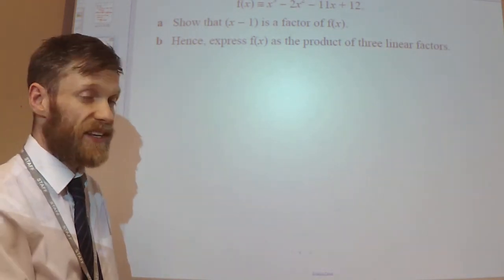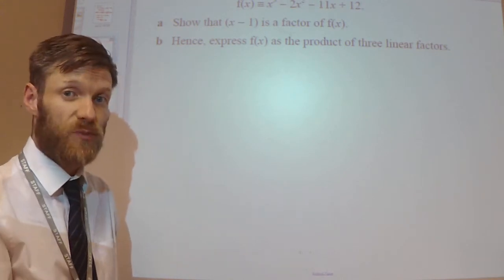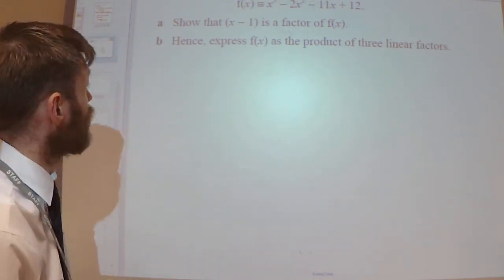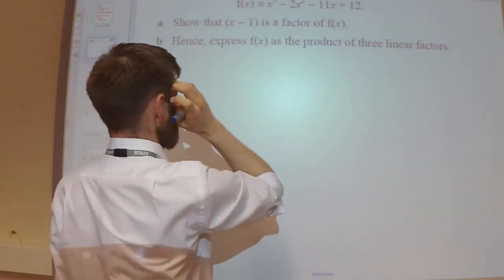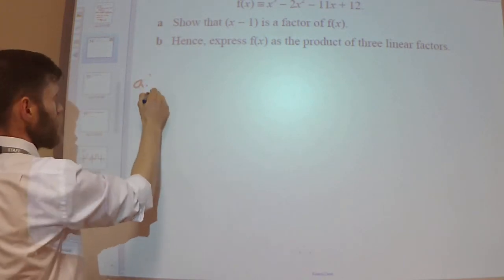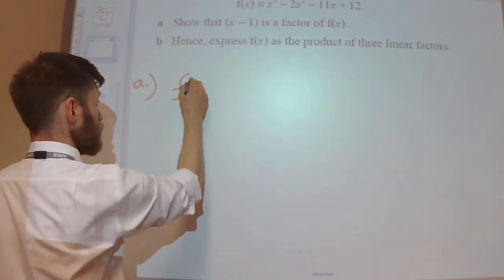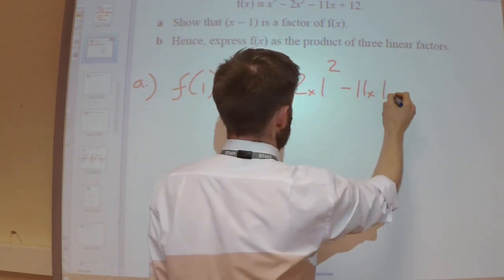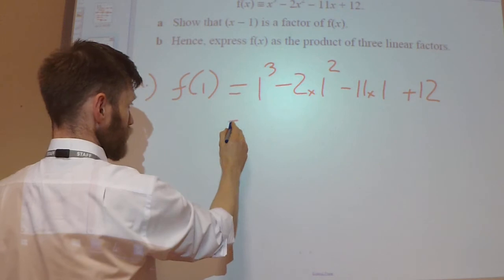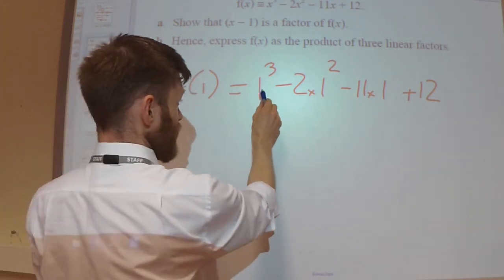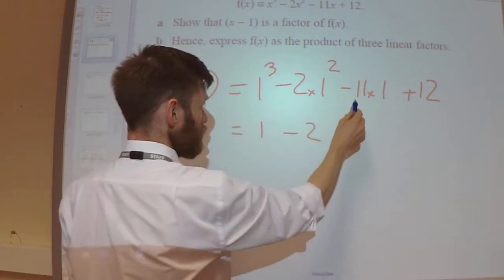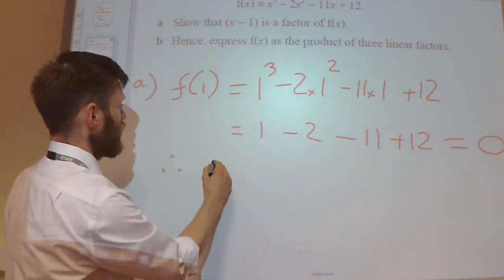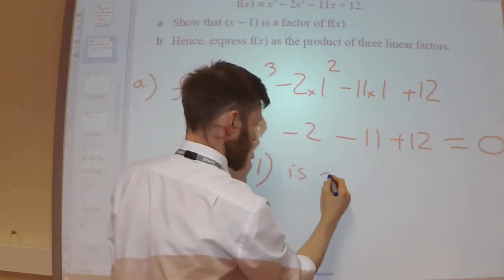Let's put this together now with the skill of algebraic division, because together the factor theorem and algebraic division is really powerful — it allows you to factorize cubics, which then allows you to sketch and solve them. Part A of this question says: show that x minus 1 is a factor of f of x. Substituting 1: 1 cubed minus 2 times 1 squared minus 11 times 1 plus 12 gives 1 minus 2 minus 11 plus 12, which equals 0. Therefore x minus 1 is a factor by the factor theorem.